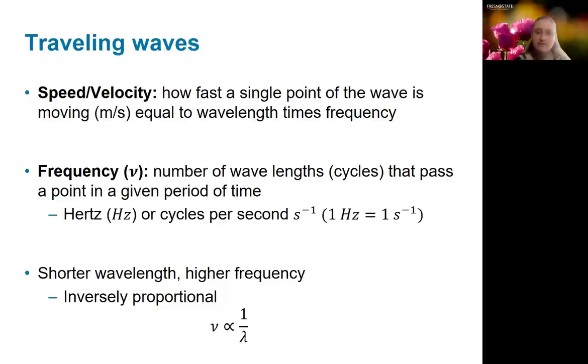There are also a couple different types of waves, and the ones we're going to focus on right now are traveling waves. Traveling waves are waves that travel in time and space, and they have a defined speed, which is how fast a single point of the wave is moving, and that speed is going to be equal to the wavelength times its frequency. The frequency is a quantity where we're defining the number of wavelengths or cycles of a wave that pass through a given point in a given period of time.